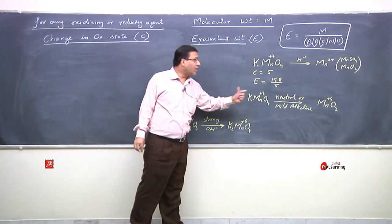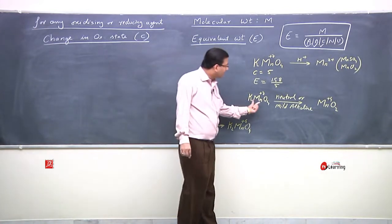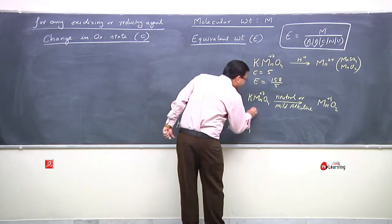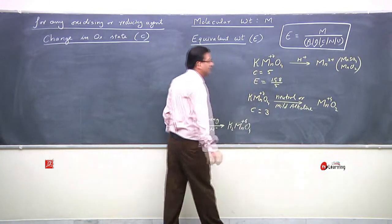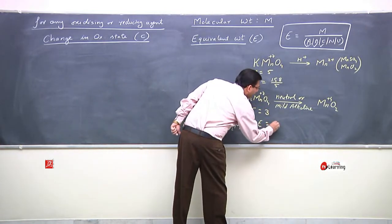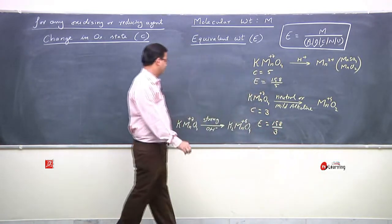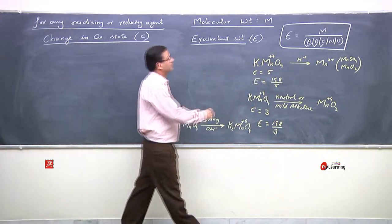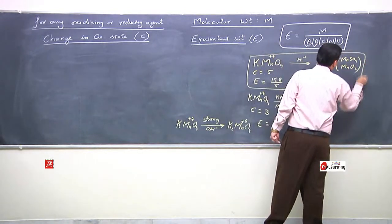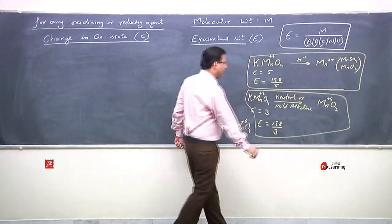In neutral or mild alkaline medium, KMnO4 gives MnO2, where Mn goes from +7 to +4. The change in oxidation state is 3 in this case. So the equivalent weight of KMnO4 here is 158 upon 3. The change in oxidation state changed, so the equivalent weight changed.